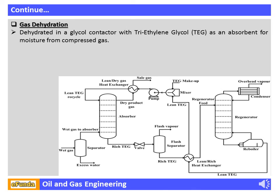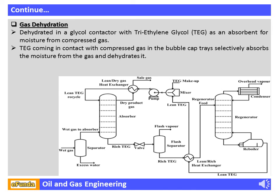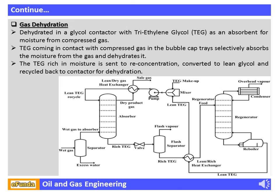Gas Dehydration: The gas is dehydrated in a glycol contactor with triethylene glycol (TEG) as an absorbent for moisture from compressed gas. TEG coming in contact with compressed gas in the bubble cap trays selectively absorbs moisture from the gas and dehydrates it. The TEG, now rich in moisture, is sent to a re-concentrator, converted to lean glycol, and recycled back to the contactor for dehydration.